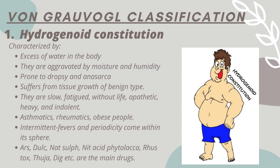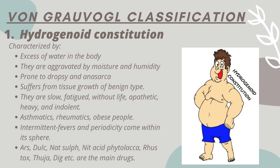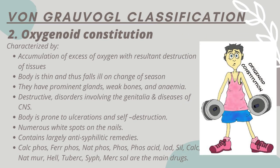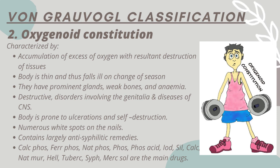Hydrogenoid constitutions are characterized by accumulation of excess of water. Accumulation of excess of oxygen with resultant destruction of tissues. Body is thin and thus falls ill on change of season. They have prominent glands, weak bones, and anemia. They are destructive disorders involving the genitalia and diseases of central nervous system. Body is prone to ulcerations and self-destruction. Numerous white spots on the nails.